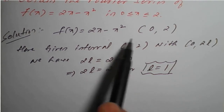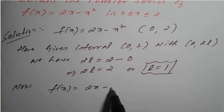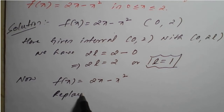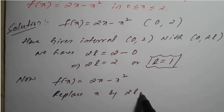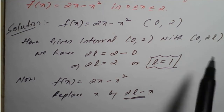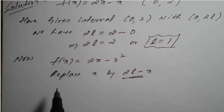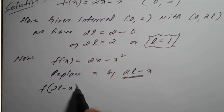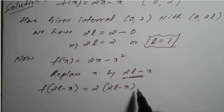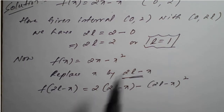Now we will test the given function for even and odd. To do this, we replace x by 2L minus x. Always remember: if the interval is 0 to 2π, replace x by 2π minus x. So f(2L - x) = 2(2L - x) - (2L - x)². Since L = 1, this becomes f(2 - x) = 2(2 - x) - (2 - x)².